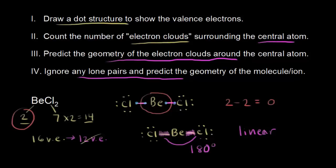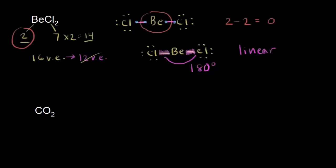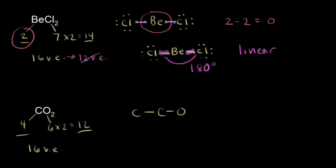Let's do another example: CO₂, carbon dioxide. We start by drawing the dot structure. Carbon has 4 valence electrons, oxygen has 6, and we have 2 oxygens, so 6 times 2 gives us 12. 12 plus 4 gives us 16 valence electrons. The less electronegative atom goes in the center, so carbon is bonded to two oxygens. We've represented 4 valence electrons — 2 here and 2 here — leaving 12 valence electrons remaining.